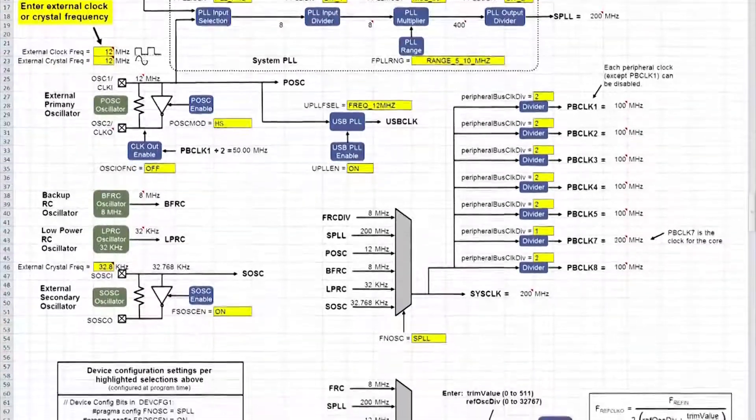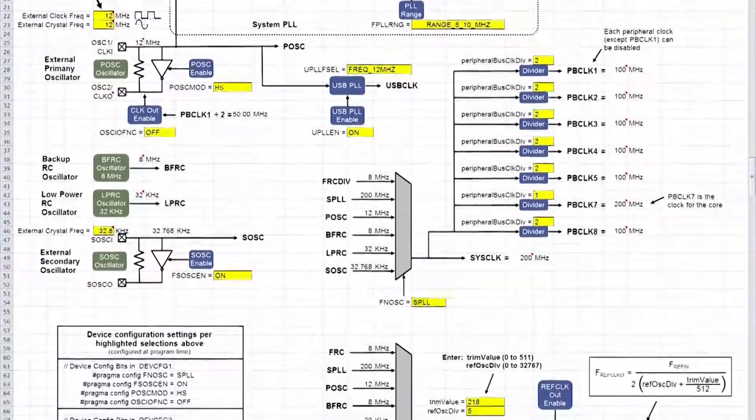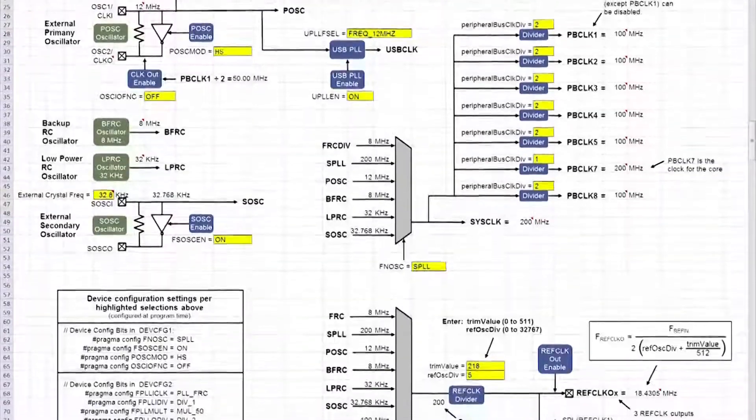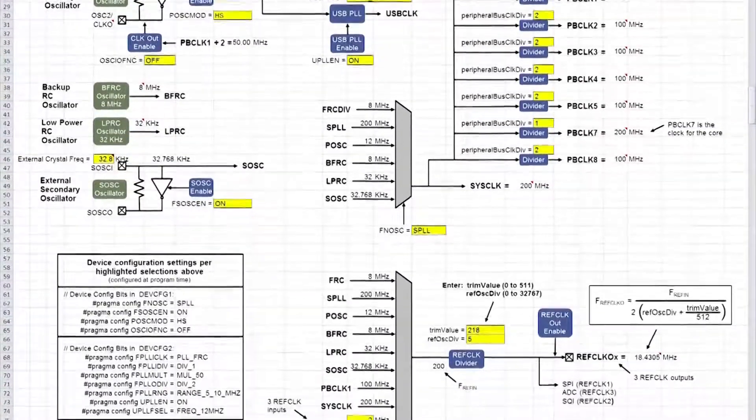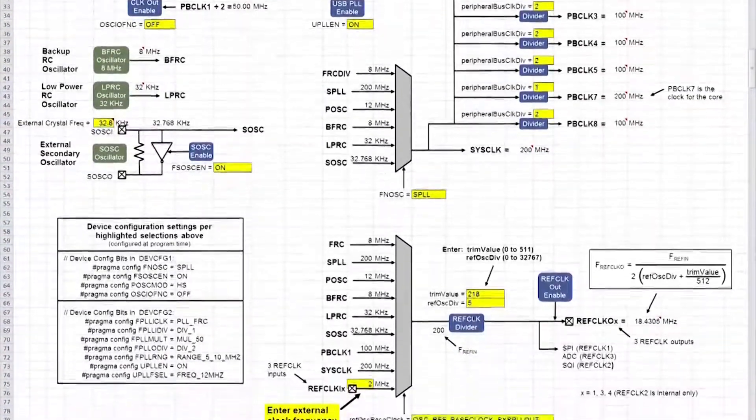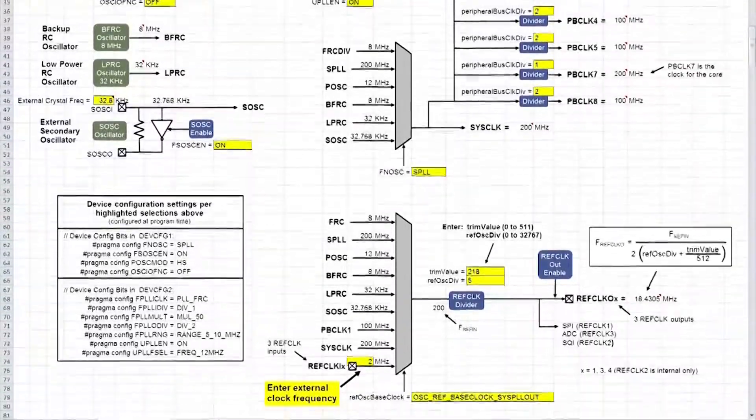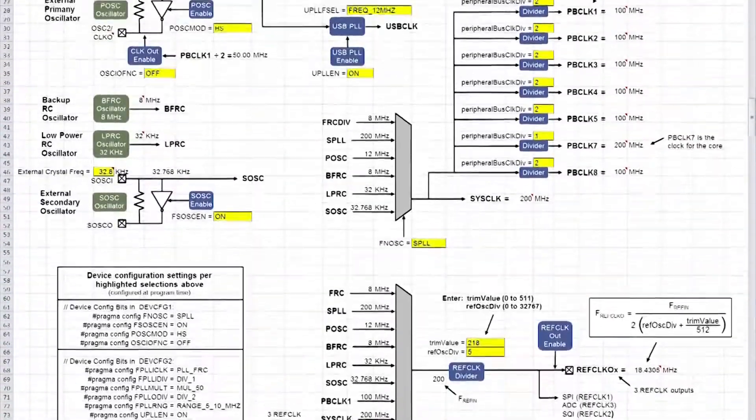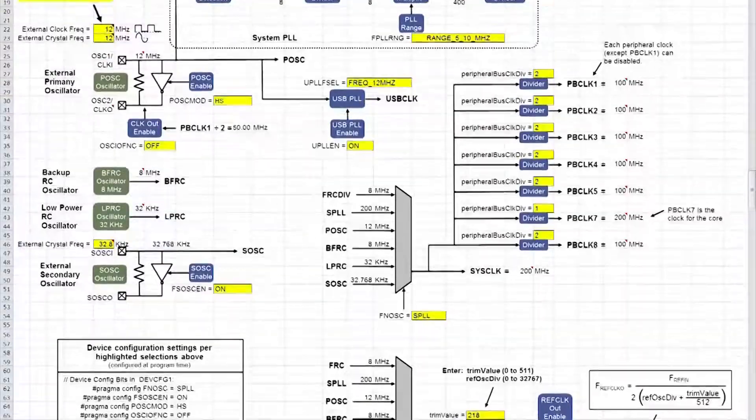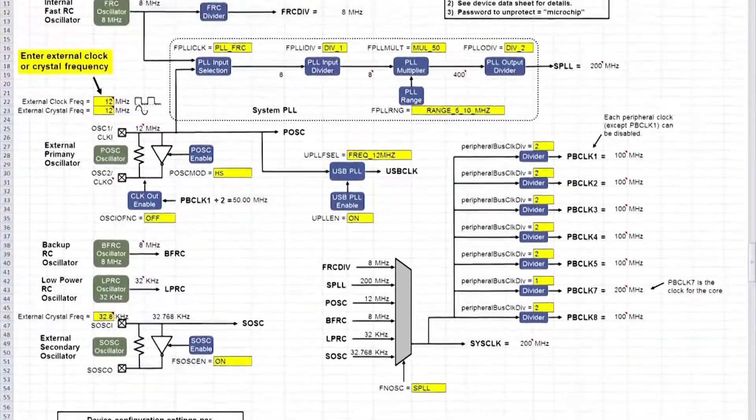The oscillator system on the PIC32 devices gives you lots of flexibility, but some configuration settings can be incompatible with others. This spreadsheet will not only provide you with the configuration settings for the oscillator system, but it will also highlight any incompatible settings for you.